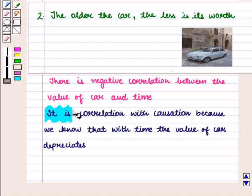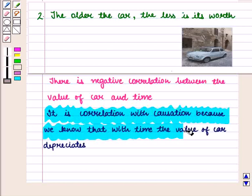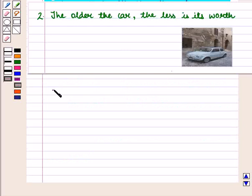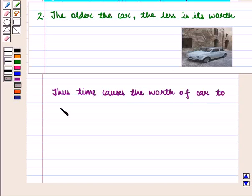It is correlation with causation because we know that with time the value of car depreciates. Thus, time causes the worth of car to depreciate.